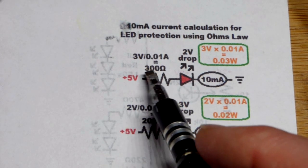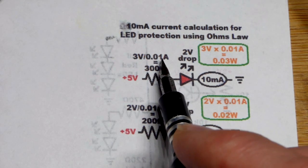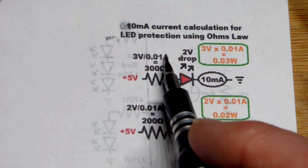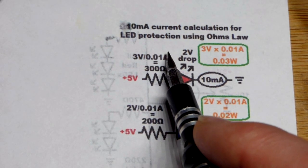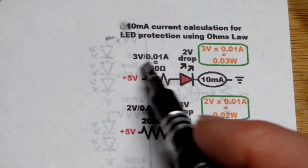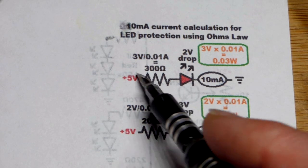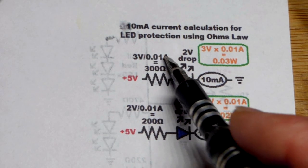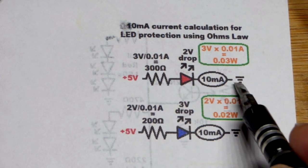If your goal is to get about a specific amount of current, because you might not have the exact value resistor you want, you can just take 3 volts divided by 0.01 amps, and so that will be a hundred times larger than the voltage, 300 ohms. You could also do 3 volts divided by 300 ohms is 0.01 amps, so that'll let 10 milliamps of current flow through the circuit.